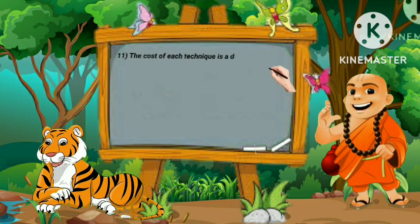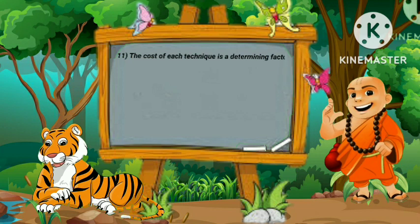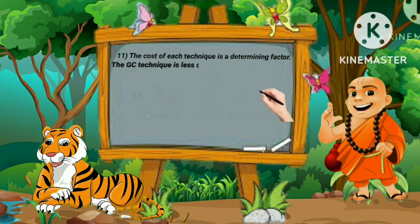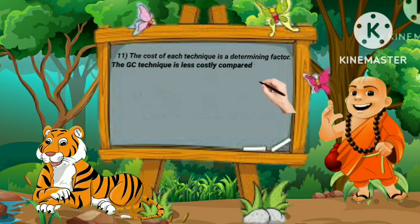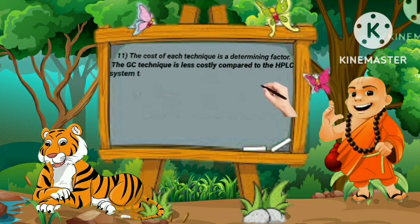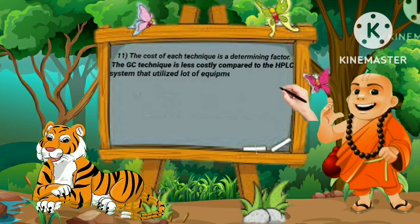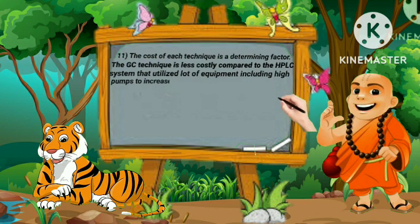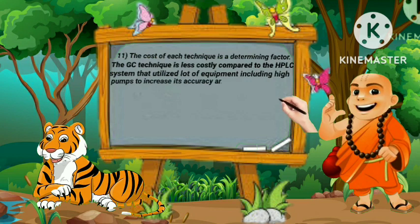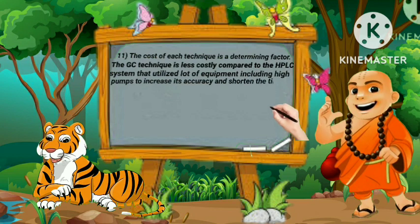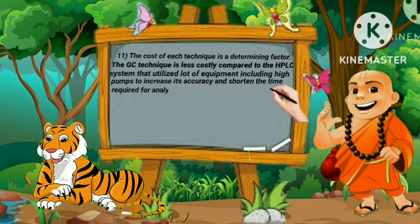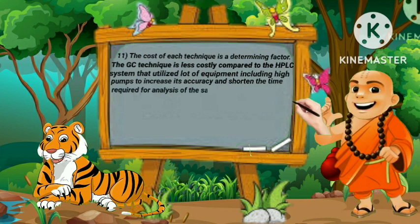The cost of each technique is a determining factor. The GC technique is less costly compared to the HPLC system, which utilizes a lot of equipment including high-pressure pumps to increase accuracy and shorten the time required for analysis.